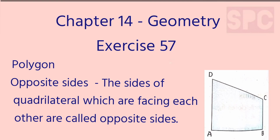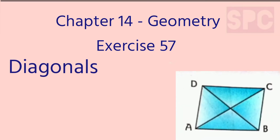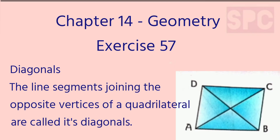Now, what are opposite sides in a quadrilateral? In quadrilateral ABCD, AB and CD make one pair of opposite sides — they are facing each other. Similarly, BC and AD make another pair of opposite sides. There is also an important term: diagonals. The line segments joining the opposite vertices of a quadrilateral are called its diagonals. For example, in quadrilateral ABCD, there are two diagonals: AC and BD, which join the opposite vertices.